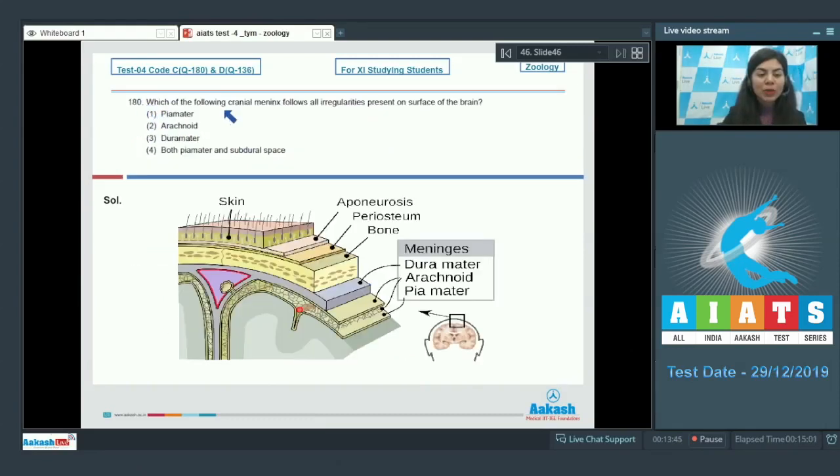Question 180: Which of the following cranial meninges follows all irregularities present on surface of the brain? Options: pia mater, arachnoid, dura mater, both pia mater and subdural spaces. If we talk about the meninges of the brain, dura is the outermost, arachnoid is middle, and pia mater is the innermost. And pia mater is continuous with the surface of brain and it follows all the irregularities, that is gyri and sulci and fissures of brain. Whereas arachnoid and dura mater do not follow all the irregularities. So the right answer here would be pia mater, option number 1.